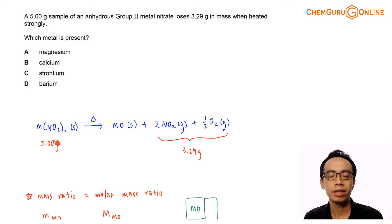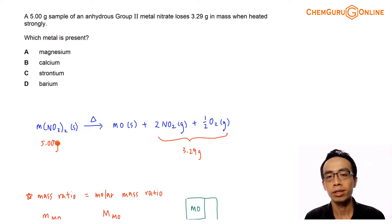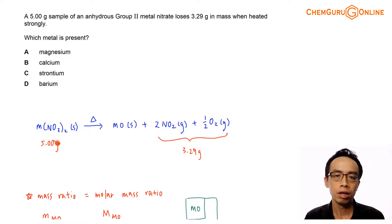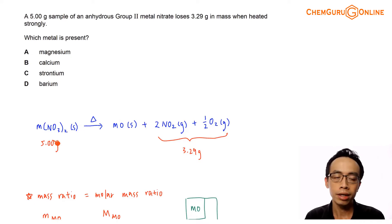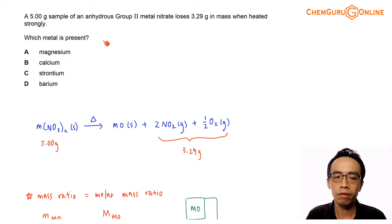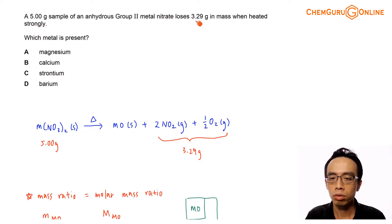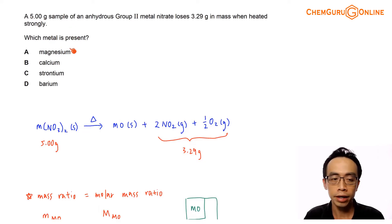Hi everyone, this is Maripa, the chemistry guru. In today's video, we want to discuss how to determine an unknown group 2 metal from the thermal decomposition of its nitrate. A 5g sample of an anhydrous group 2 metal nitrate loses 3.29g in mass when heated strongly, and we want to identify this group 2 metal.